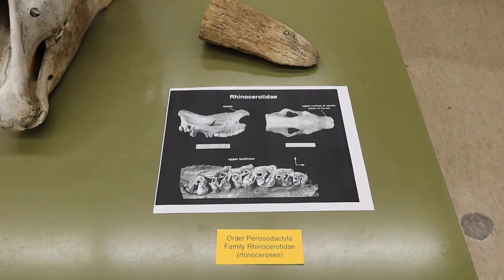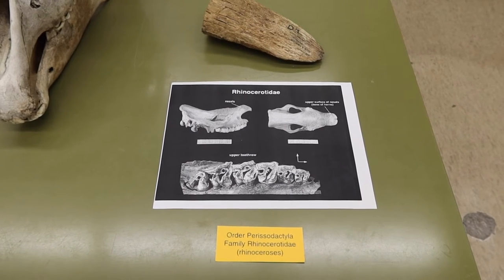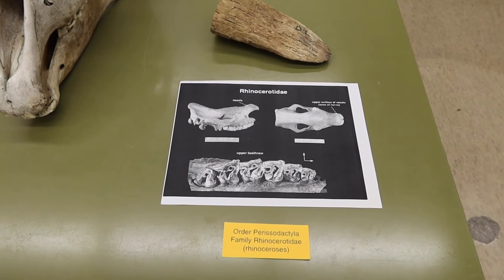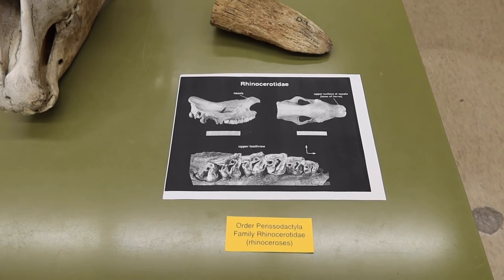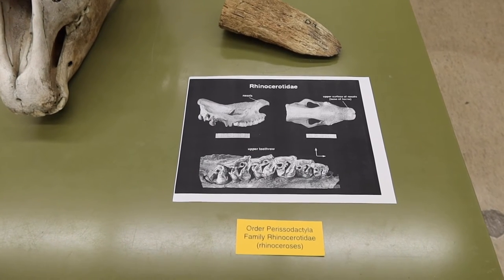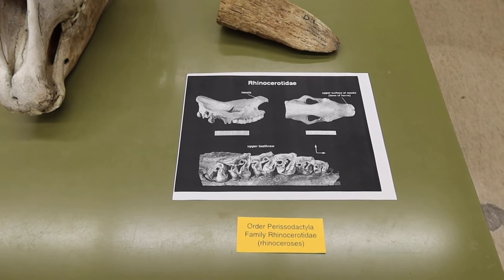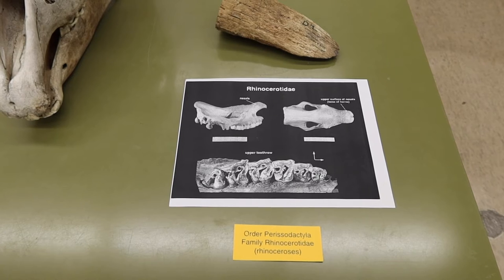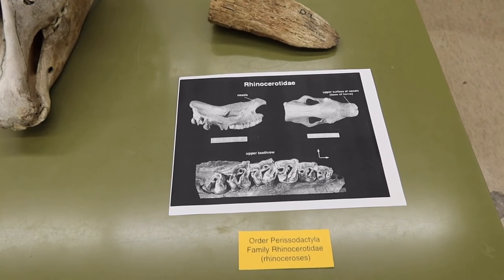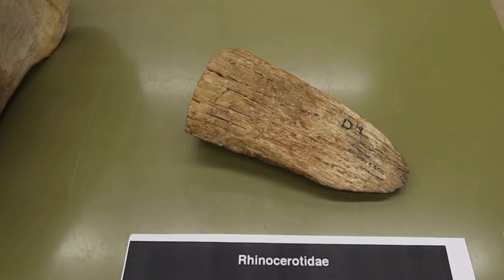This is the family Rhinocerotidae. They're found in the Ethiopian and Oriental faunal regions. The African species prefers savannas and open forests, while the Asian species prefers denser forests. They are browsers with a prehensile upper lip that they use to gather vegetation. They have one to two horns of dermal origin, meaning they're made up of compressed keratin fibers and do not have a bony core. They're sparsely haired with very thick skin, and they're generally solitary, rapidly declining due to poaching for their horn and other body parts. We don't have any skulls in the lab, but we do have a rhino horn specimen, which is really cool.